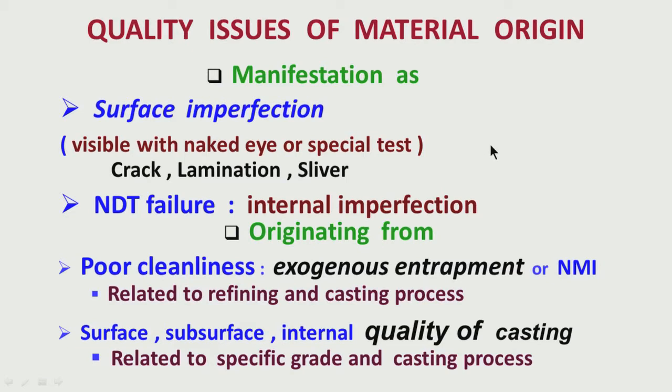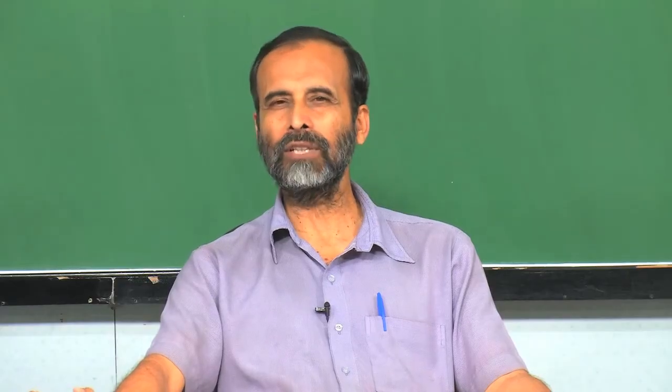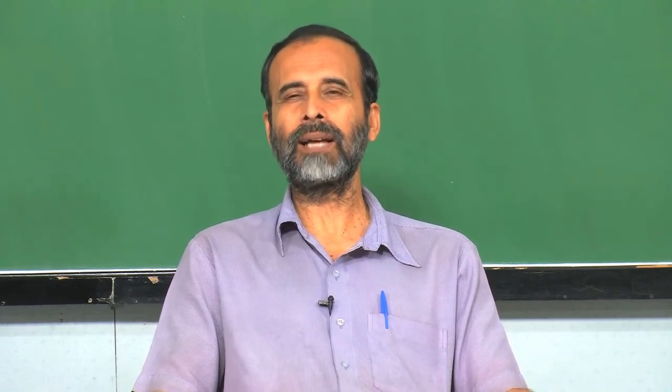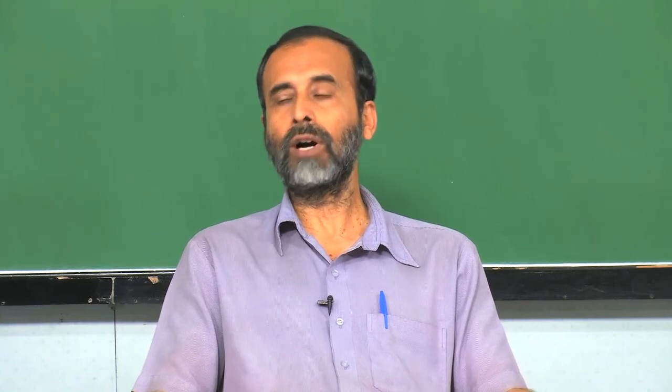First was the surface imperfection — those defects which you can see with the normal eye or with some minor modification of the surface. Those are called surface or subsurface imperfections. For example, there may be some surface crack, there may be a lamination as if two surfaces are existing side by side, or there may be a sliver — basically a very thin line of defect on the surface. So these are all called surface imperfections, which you do not want present on the surface because they might lead to undesirable performance of the product.